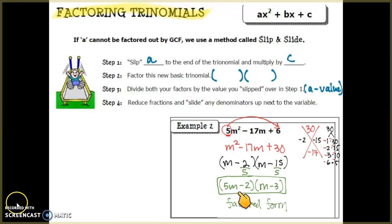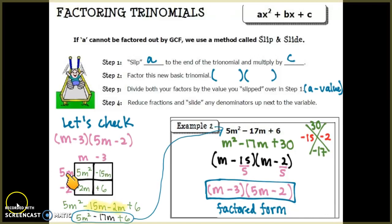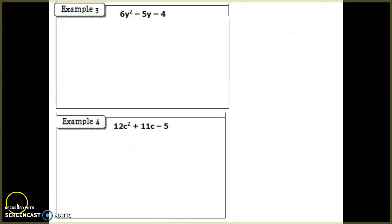Let's multiply the factored form to check. Flip your paper over and do the multiplication on the back. Multiplying (5m − 2)(m − 3): 5m × m = 5m², 5m × −3 = −15m, then combining the middle terms −15m and −2m gives −17m. The product is 5m² − 17m + 6, which is the same as what we started with. The factored form is equivalent to the standard form.